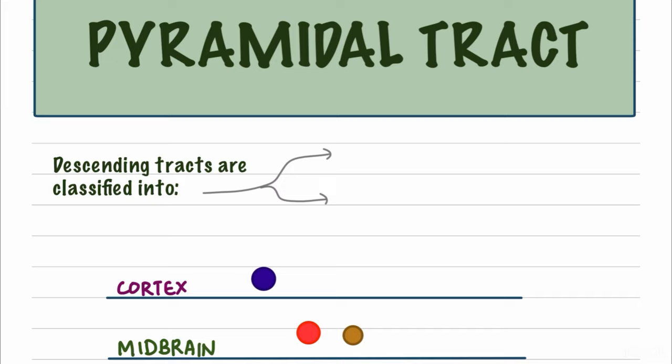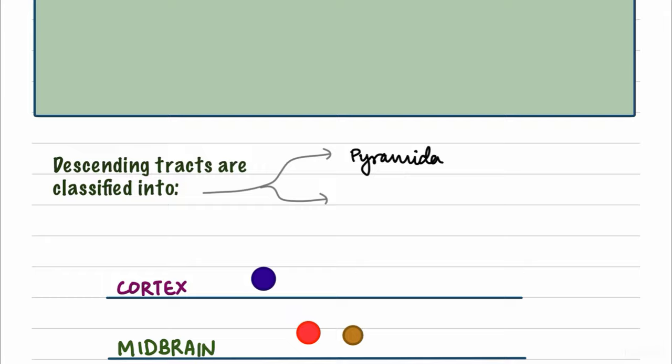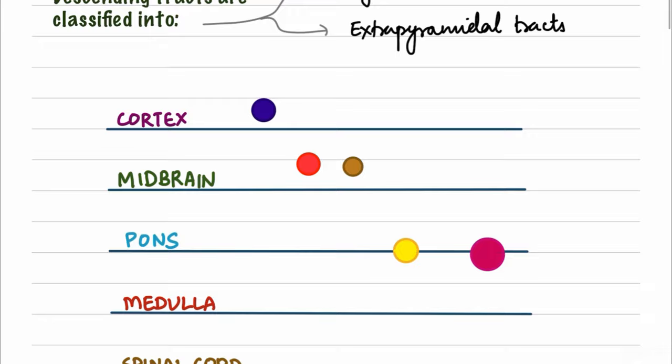In this video, our discussion will be about the pyramidal tracts and we'll also discuss hemiplegia and UMN or LMN lesions for first MBBS. We begin with the descending tracts. The ascending tracts are the sensory pathways whereas the descending tracts are the motor pathways. There are two categories: the pyramidal tract, which we'll discuss in detail, and the extrapyramidal tracts.